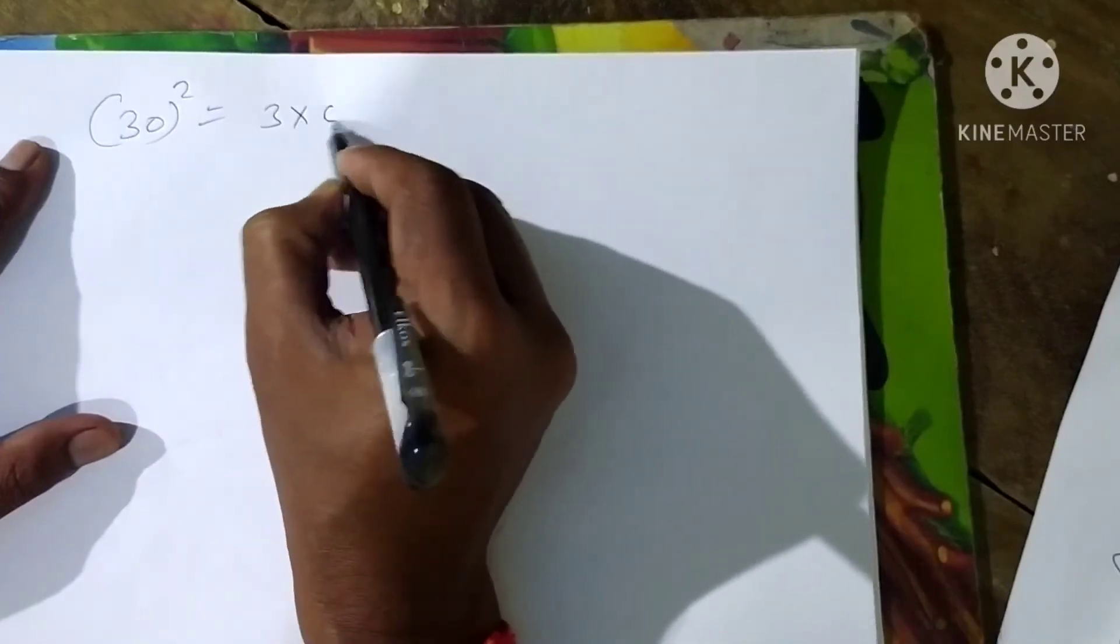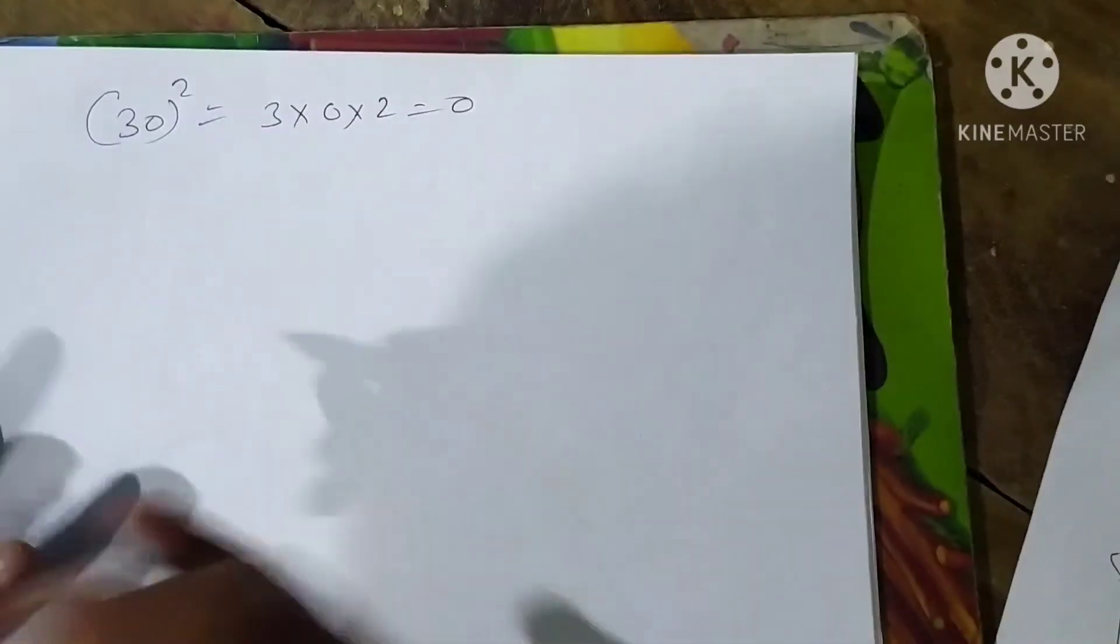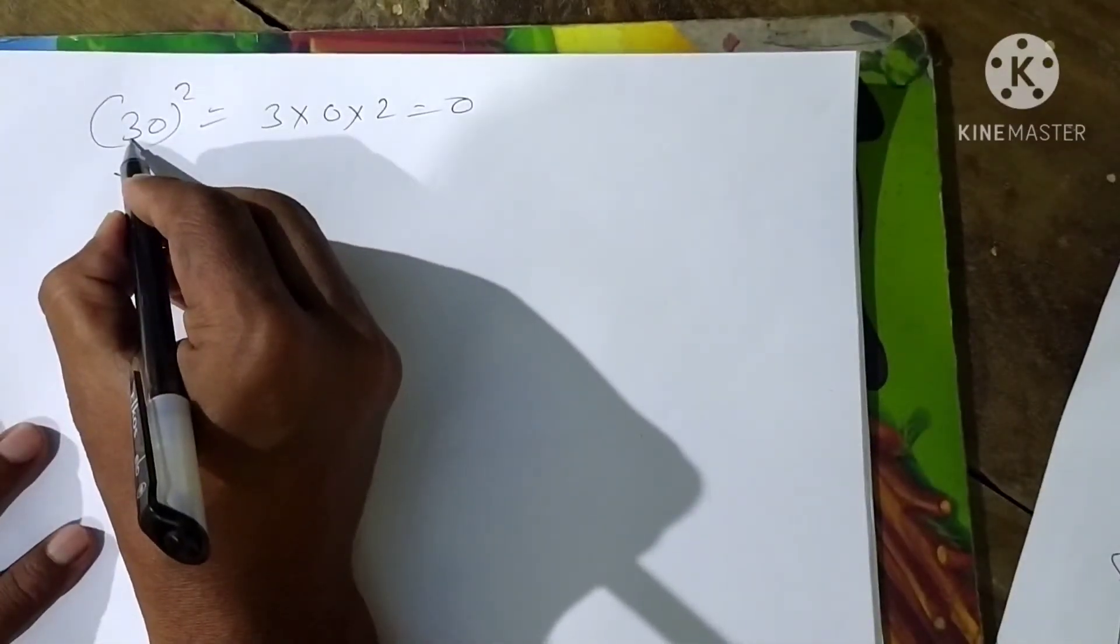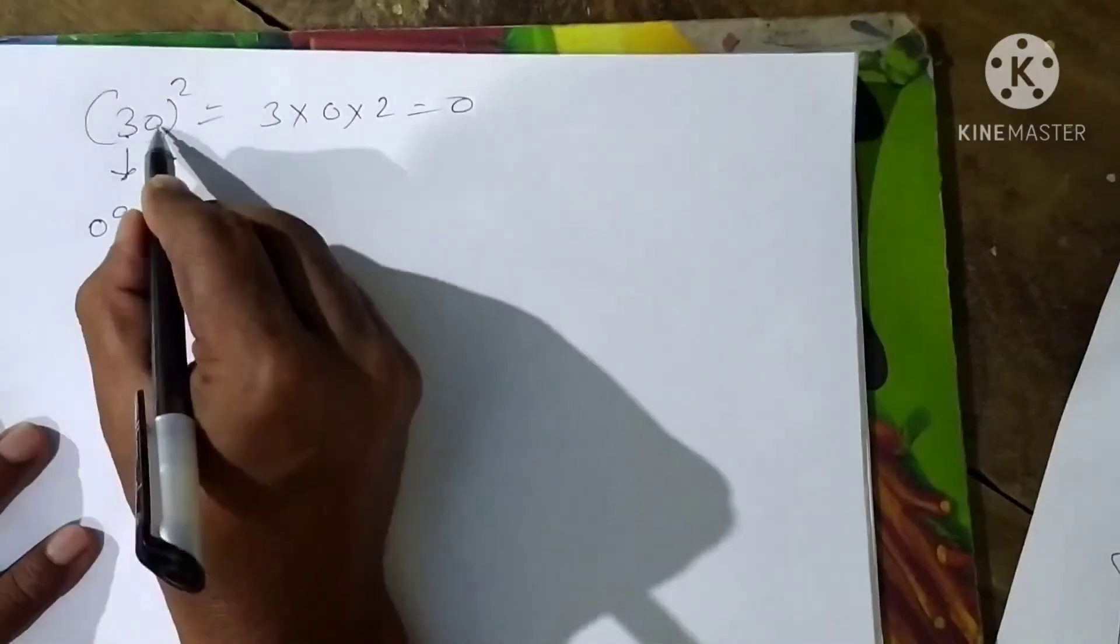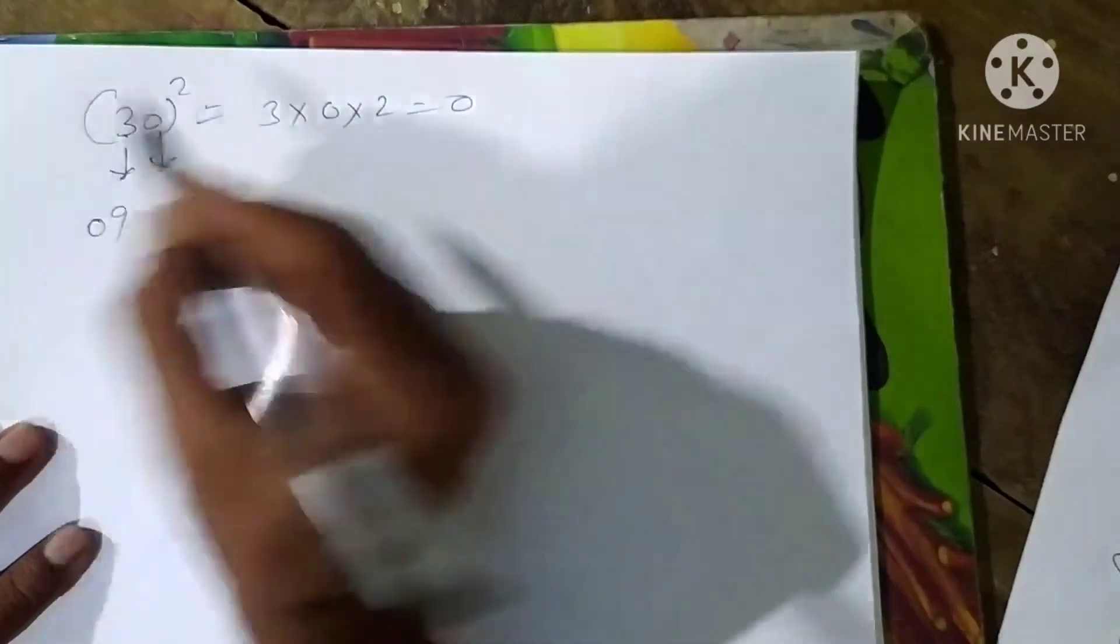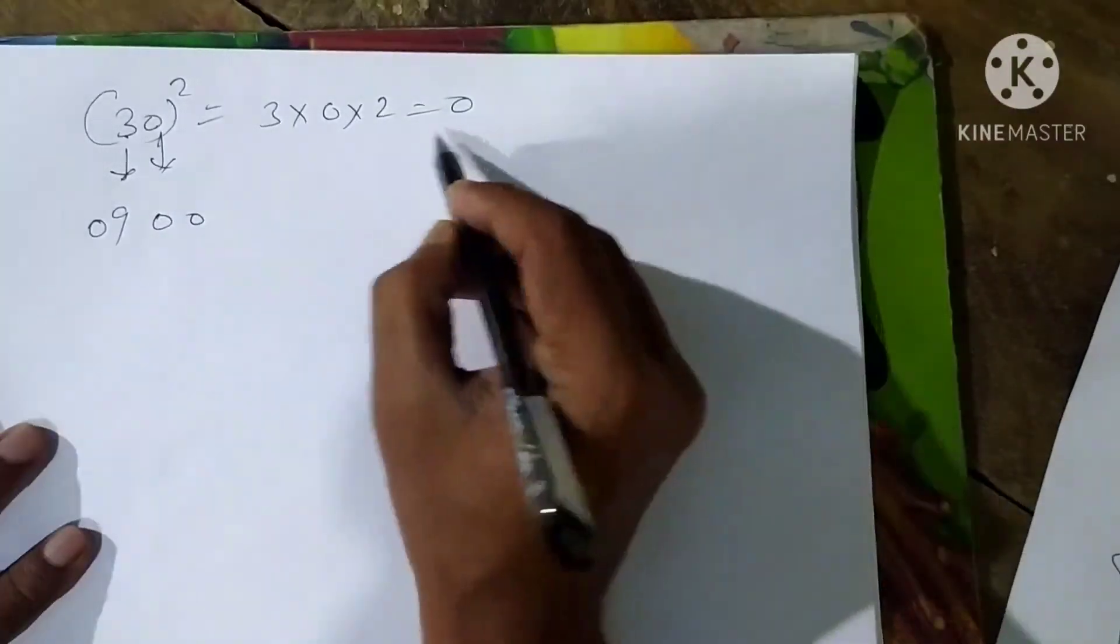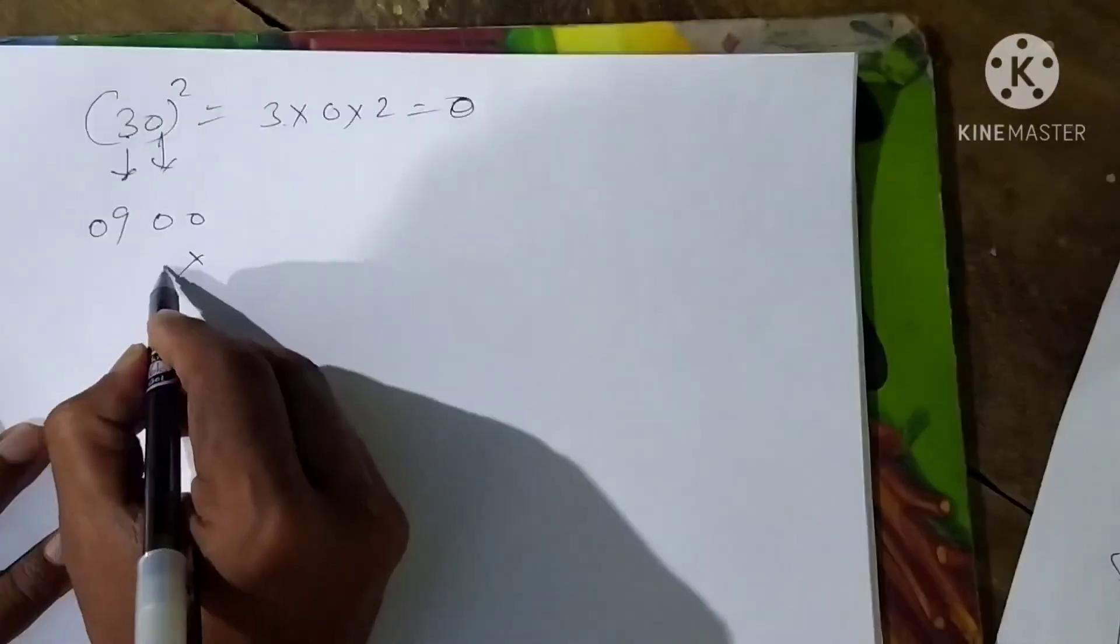3 into 0 into 2, so the answer is zero. Now write 3 squared - don't write 9, write 09. For 0 squared, 0 will come but you have to take double digit, so write 00.